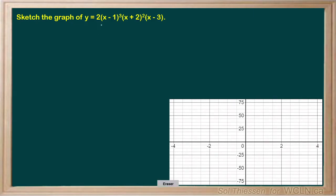Sketch the graph of y equals 2 times x minus 1 cubed times x plus 2 squared times x minus 3. Let's start by determining the easiest graphable characteristics, which will be the roots in this factored format, as well as their multiplicities.